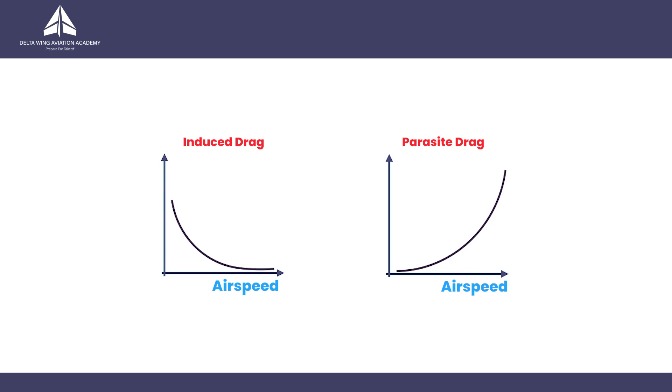On the other hand, an increase in airspeed increases parasite drag by a factor of the square of airspeed. So if you double the airspeed, for example, you get four times the parasite drag.